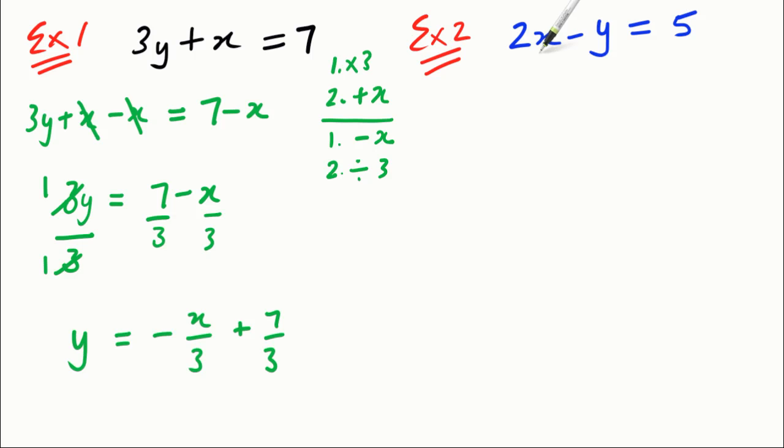In this example here, 2x minus y equals 5. This time what I want to do is swap these two terms around so the y term's at the front, and this minus belongs to that y, so it becomes minus y, and this is positive 2x, so plus 2x equals 5.